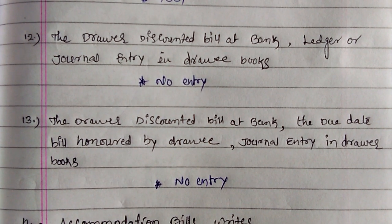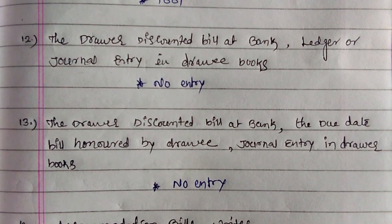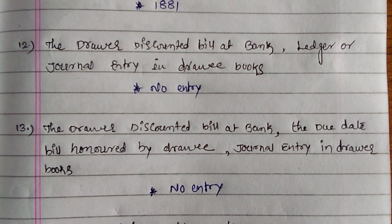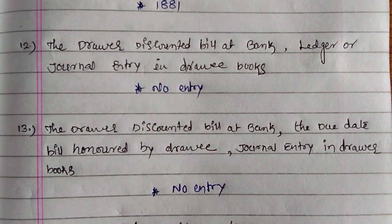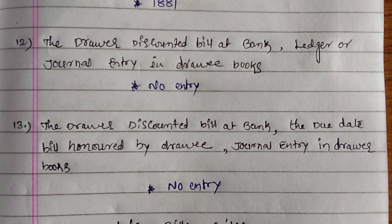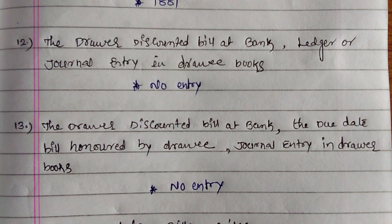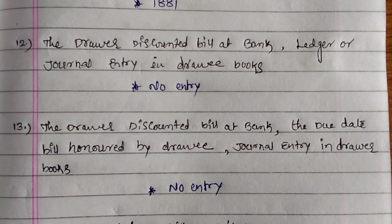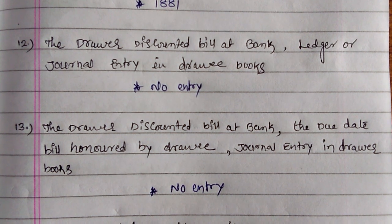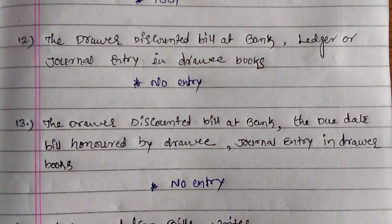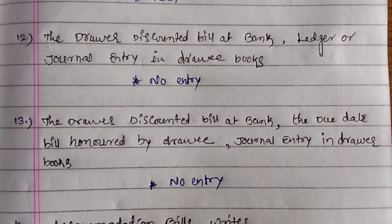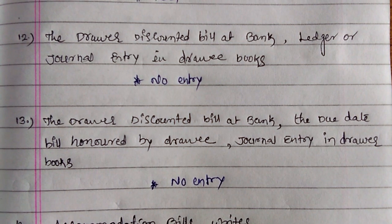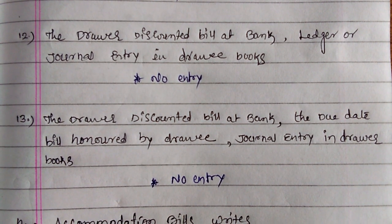Next: the drawer discounted a bill at bank. The journal entry in the drawee's books — no entry. Why? Because there is no relation for the drawee regarding the drawer's discounting at bank. So the drawee never makes an entry; the answer is no entry.